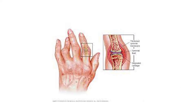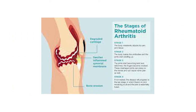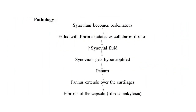Images show rheumatoid changes in the phalanges. Early-stage images show swelling and marginal erosions highlighted in red. Stages of rheumatoid arthritis show bone erosion, degraded cartilages, swelling, inflammation, and synovial membrane changes in the knee joint. Pathology: the synovium becomes edematous, filled with fibrin exudate and cellular infiltrates; synovial fluid increases; synovium hypertrophies; pannus extends over cartilages; fibrosis of the capsule leads to fibrous ankylosis.